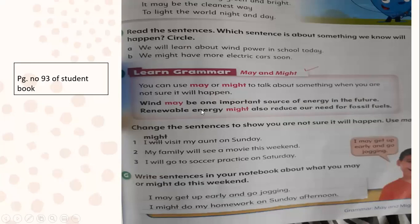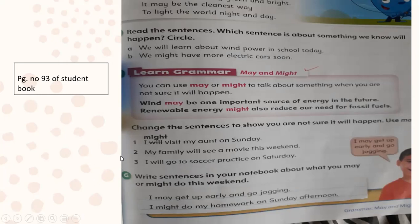The possibility of renewable energy reducing our need for fossil fuels is less certain, so we use 'might.' Sometimes you need to look at the sentence to see whether might or may fits better. When reading a sentence you'll be able to determine which to use. Now, change the sentences to show you're not sure it will happen using may and might. Number one is already done: 'I might visit my aunt on Sunday.'